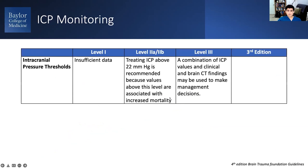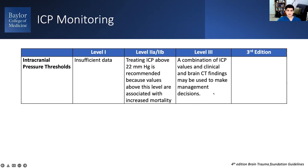What do the Brain Trauma Foundation Guidelines say about pressure thresholds? Well, vaguely, they say that above 22 is associated with increased mortality, so you want to treat ICP above 22. And that some combination of the values from your ICP monitor, imaging, and your clinical exam should help you make a decision about when to treat.